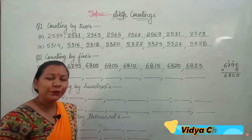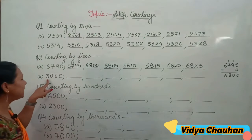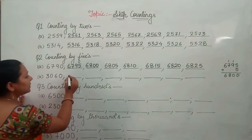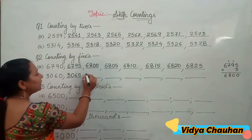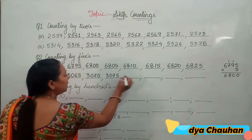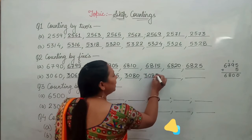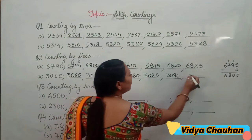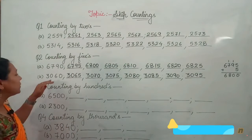Now solving the next part with starting number 3060: adding 5 each time gives 3065, 3070, 3075, 3080, 3085, 3090, and 3095. This is how you do skip counting by 5.